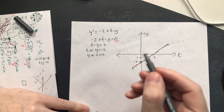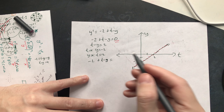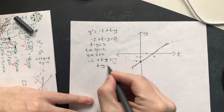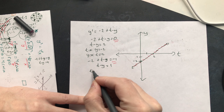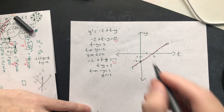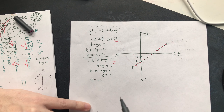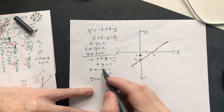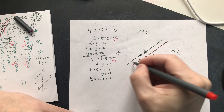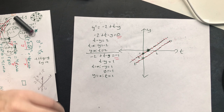Now repeat this process. Set -2 + t - y equal to -1, asking: where is the slope always -1? Solving gives t - y = 1, so when t = 0, y = -1, and when y = 0, t = 1. Draw that line, and along it all the slope segments have a slope of -1 — they're negative, slanting downward.